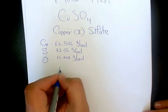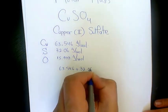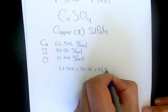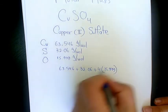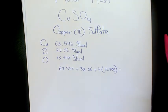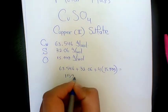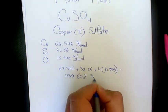We have 1 Copper, 1 Sulfur, and we have 4 Oxygen. That will be 63.546 plus 32.06 plus 4 times 15.999. That's going to give us 159.602 grams per mole.